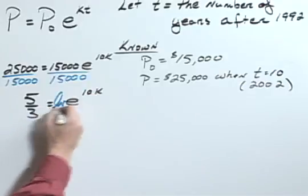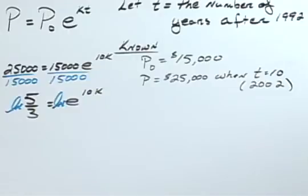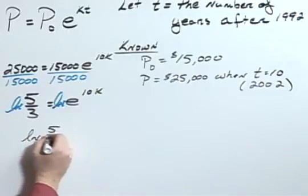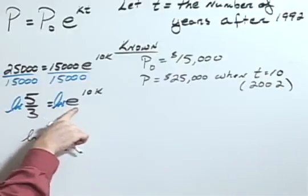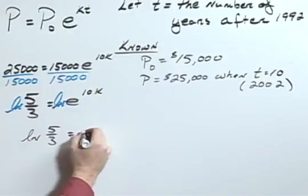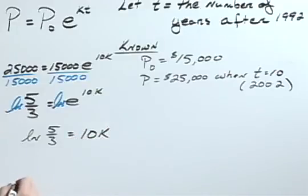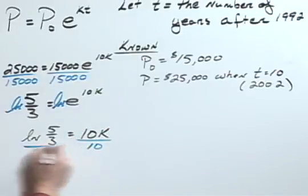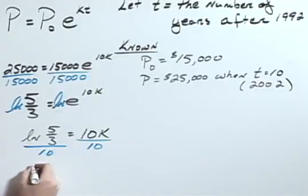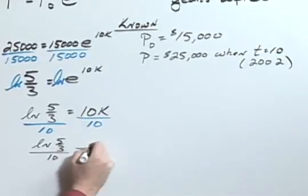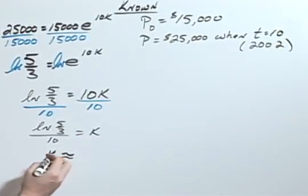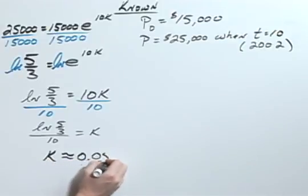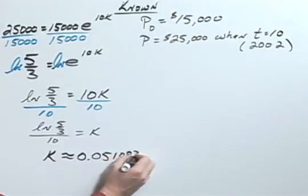Next, take the natural log of both sides. So the natural log of 5 thirds equals, remember the natural log of e to any power is simply that power, so equals 10k. Divide both sides by 10 so that the natural log of 5 thirds divided by 10 equals k. That means that k is approximately equal to 0.051083.